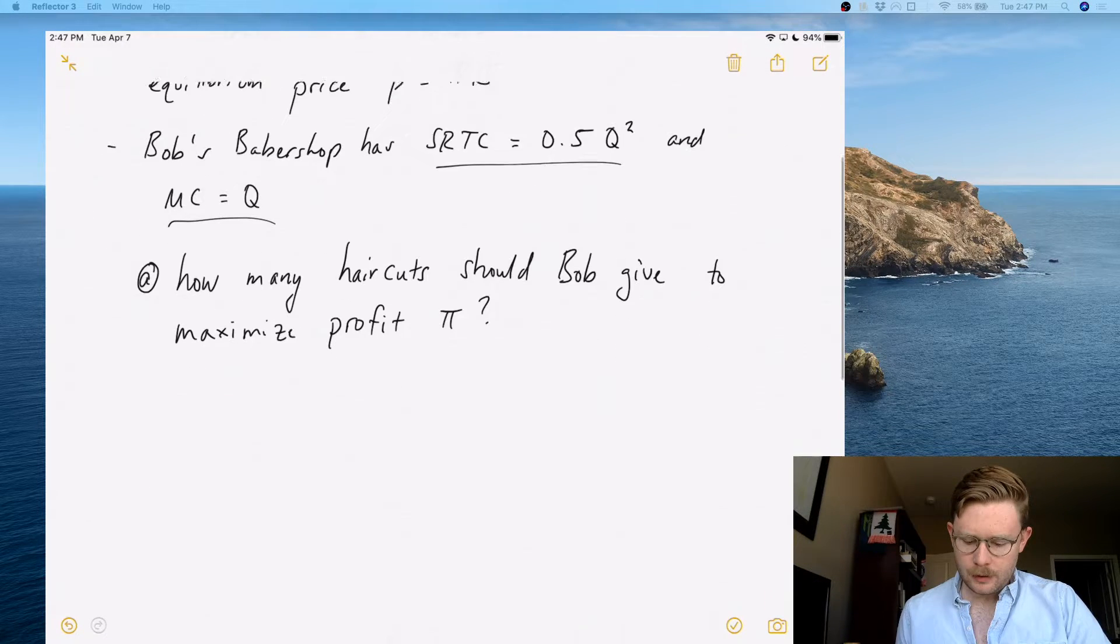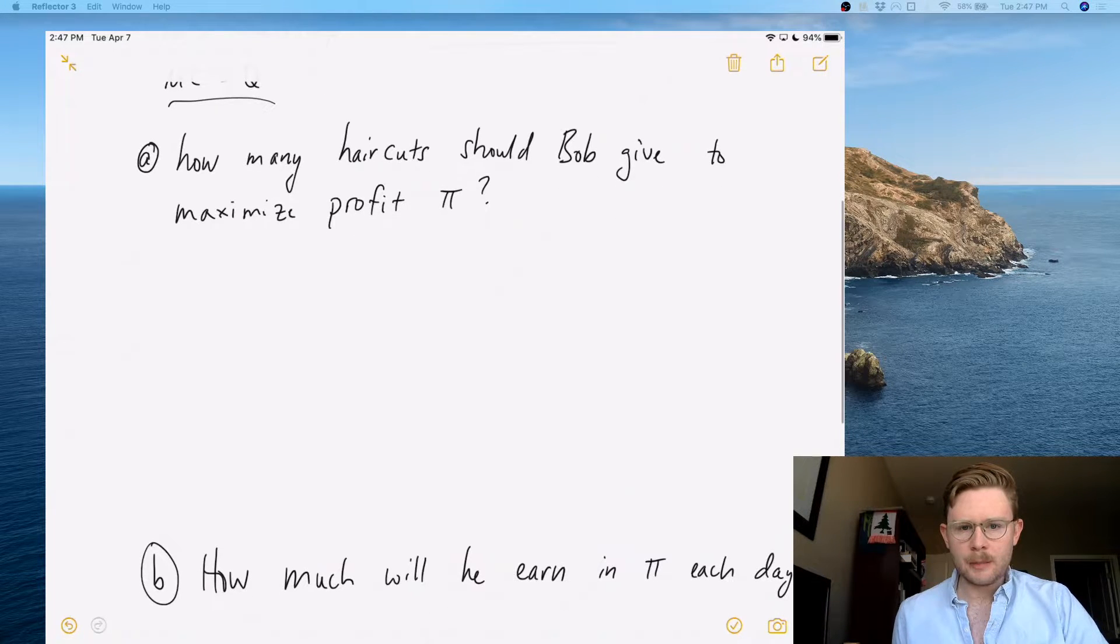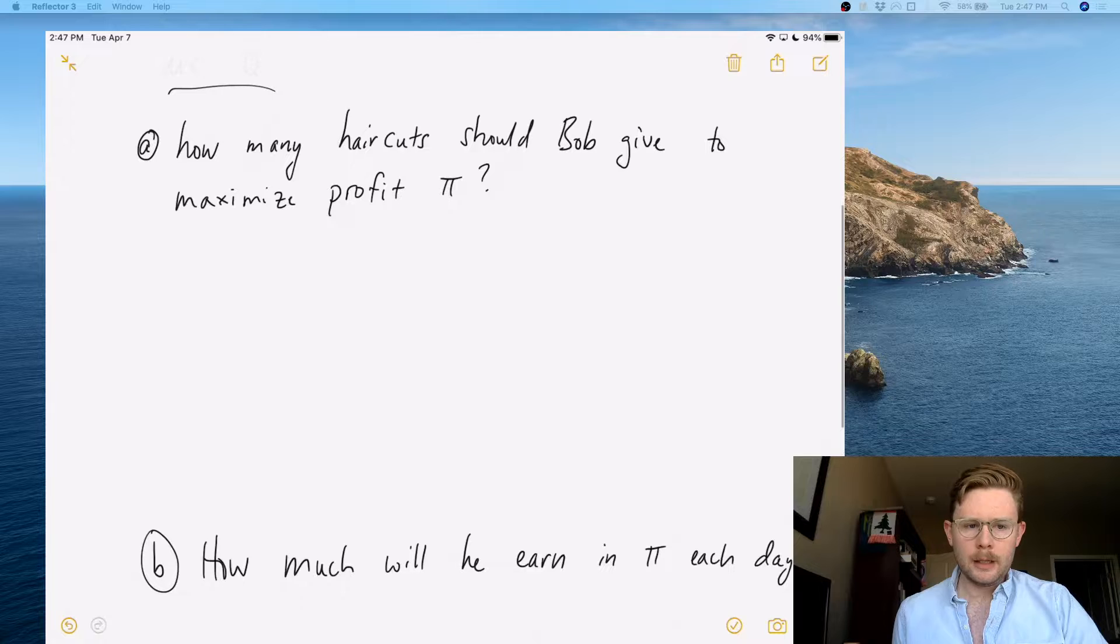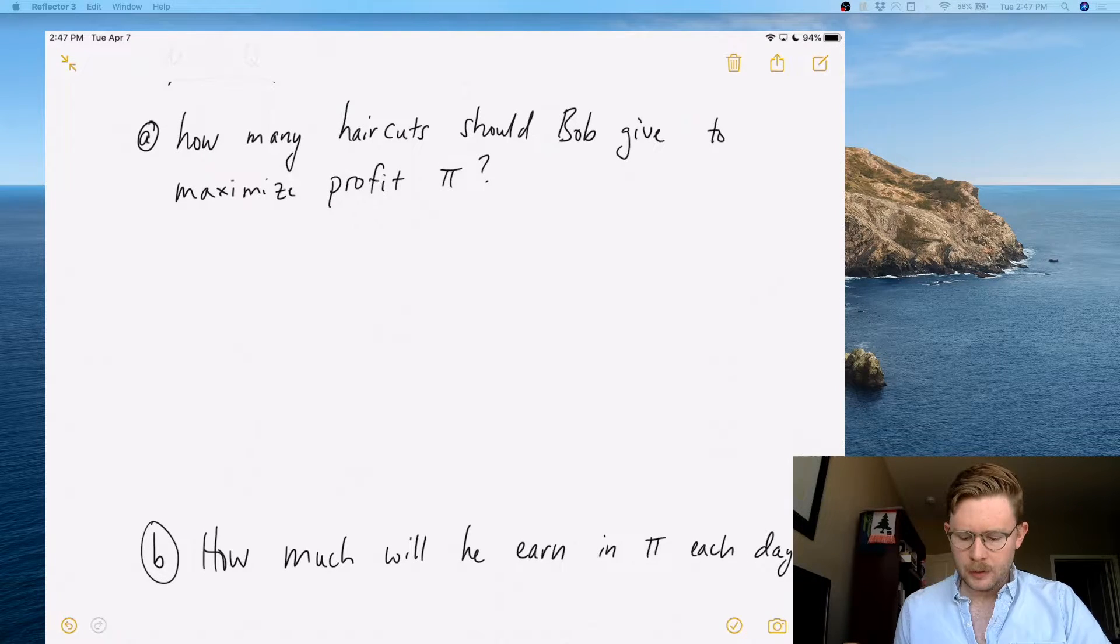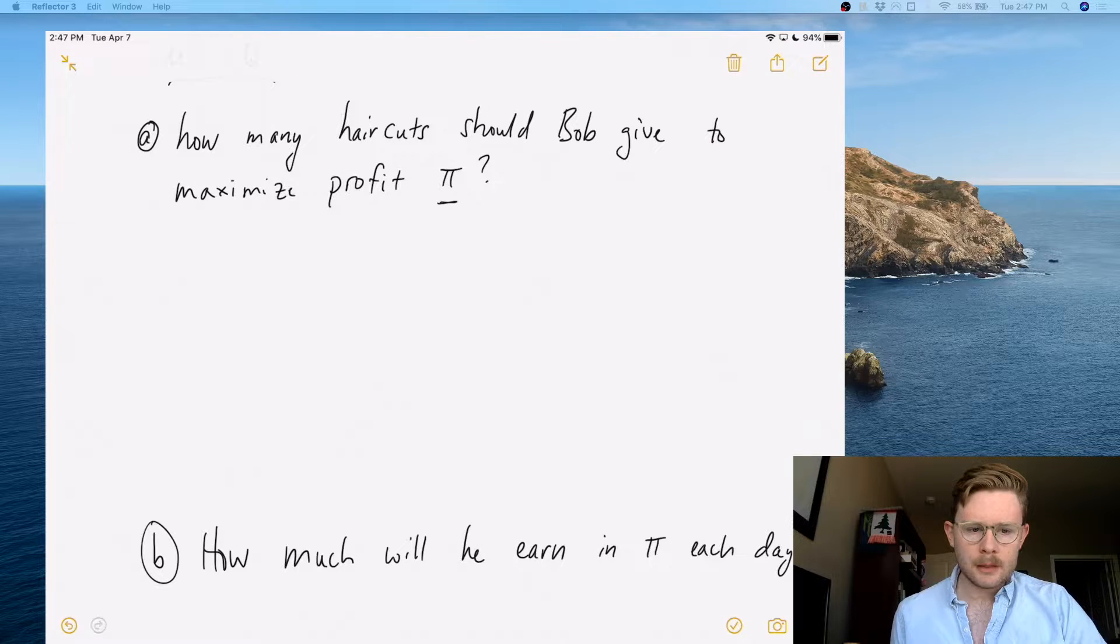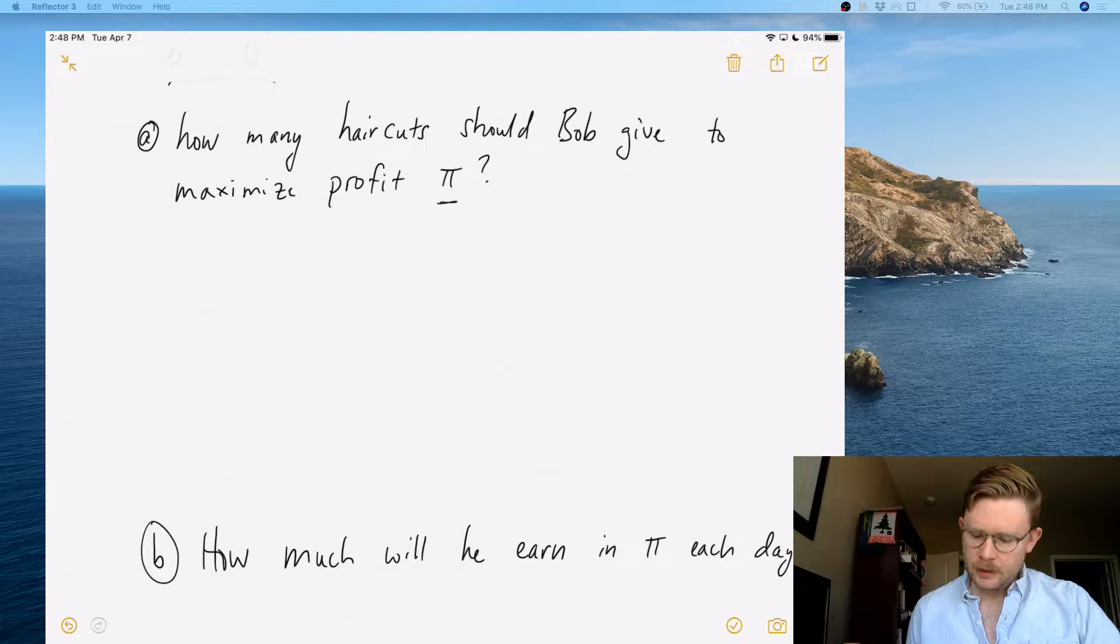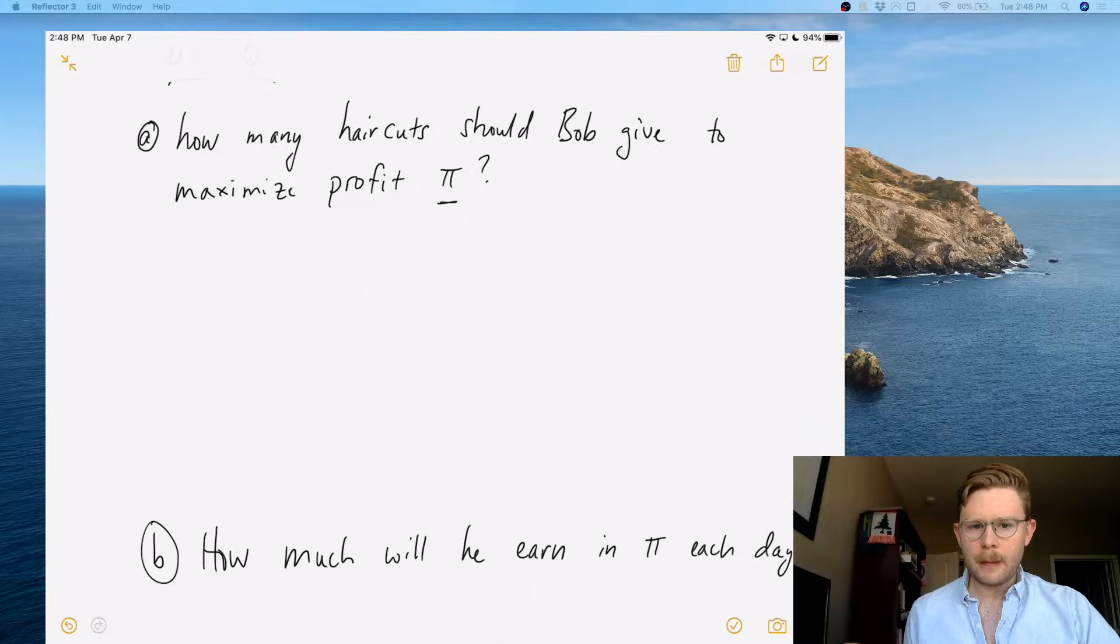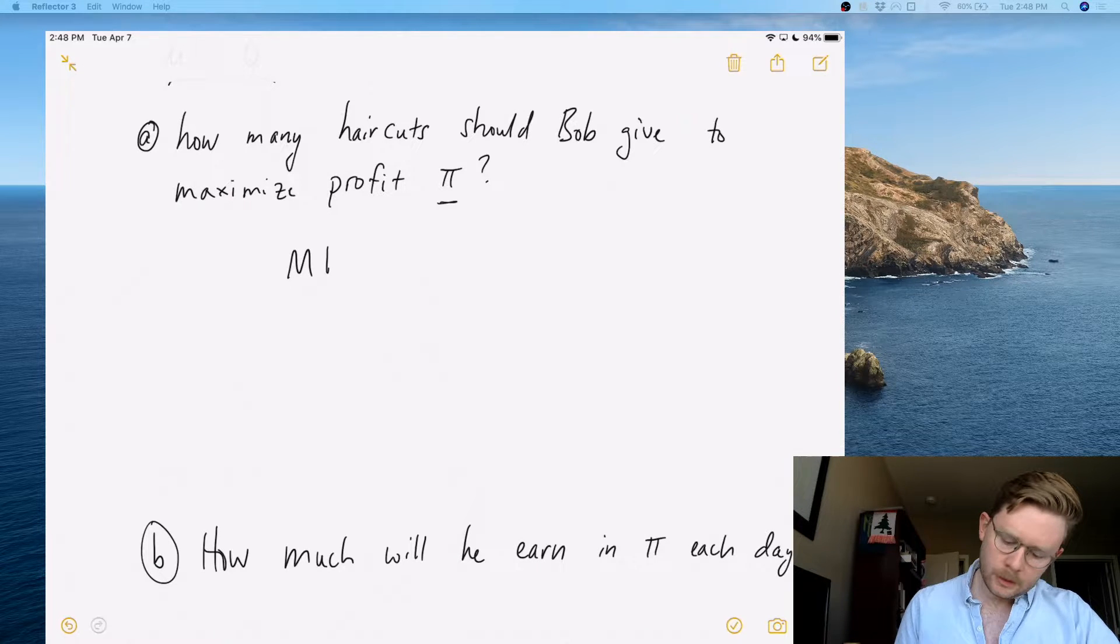So the first part asks, how many haircuts should Bob give to maximize profit π? I don't think I said this in the lecture videos, but the Greek letter π is what economists use as shorthand for profit. So how do we do this? First step is to remember that the profit maximizing quantity for a firm is when marginal revenue equals marginal cost.